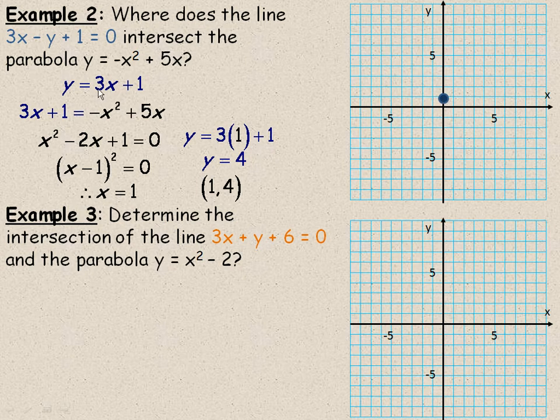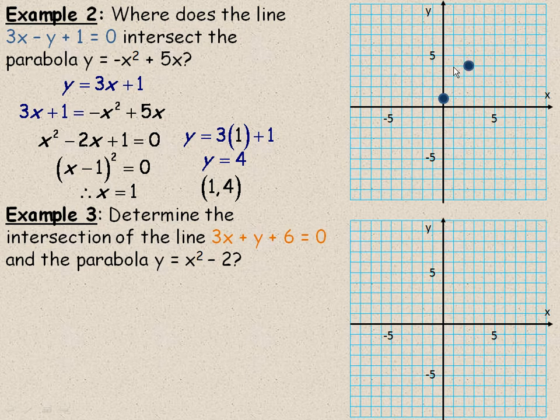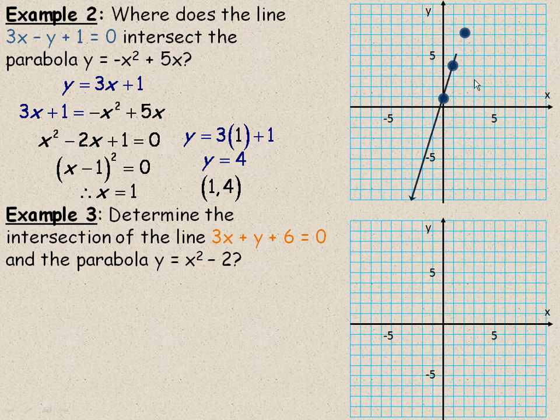The 3 is the slope. So 3 is the same as 3 over 1. So if that point is on the graph, if we go over 1 and up 3, we'll get another point. If we go over 1 and up 3, we'll get another. And we do that for a few points, then we can draw our line. So that's what y = 3x + 1 looks like.